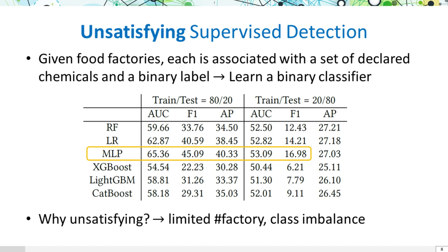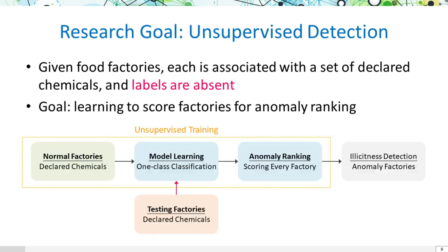An intuitive way to AI detection is supervised learning based on declaration tabular data. However, well-known predictors such as tree-based models and MLP produce unsatisfying results. We resort to unsupervised learning because it can operate without labeled examples and has the potential to uncover hidden patterns and anomalies. Given food factories, each is associated with a set of declared chemicals, and labels are absent — our goal is to learn to score illicit factories.